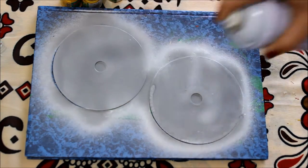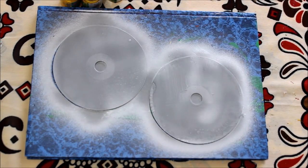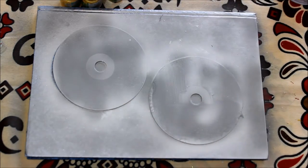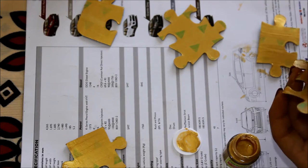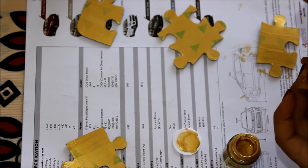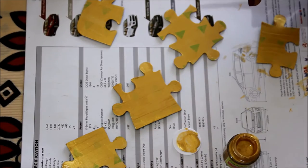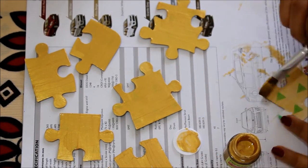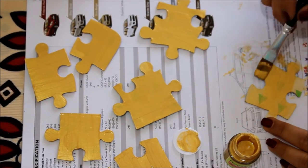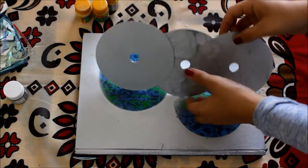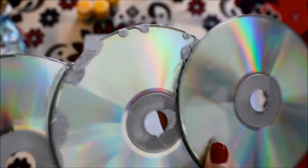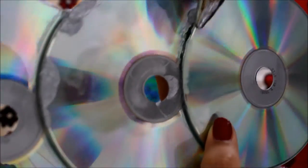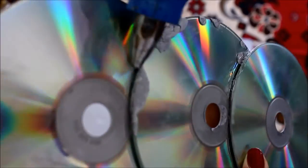And now for our last DIY for today, we will again require three full CDs, a silver spray paint or any color of your choice of course, and some puzzle pieces from the puzzle you no more use. I have painted the puzzle pieces golden. You can again choose any color you want to. Once you're done with that, you need to stick the three CDs together with the help of a glue gun, in such a manner that they overlap each other.